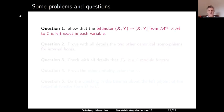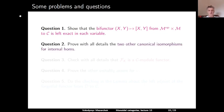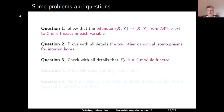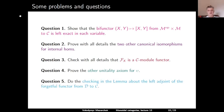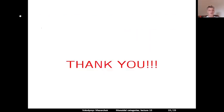Some problems and questions. Question 1: show that the bifunctor (X,Y) ↦ [X,Y] is left exact in each variable. Question 2: prove with all details the two other canonical isomorphisms for internal homs. Question 3: check with all details that the functor of taking the internal hom from X to somewhere is a C-module functor. Question 4: prove the second unitality axiom for ι. Question 5: do the checking in the lemma about the left adjoint of the forgetful functor from D to C. Thank you very much, and see you next time.